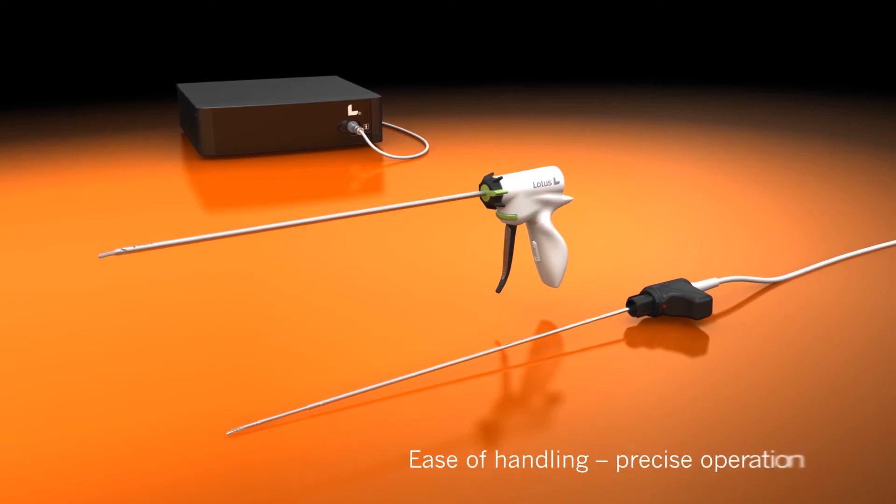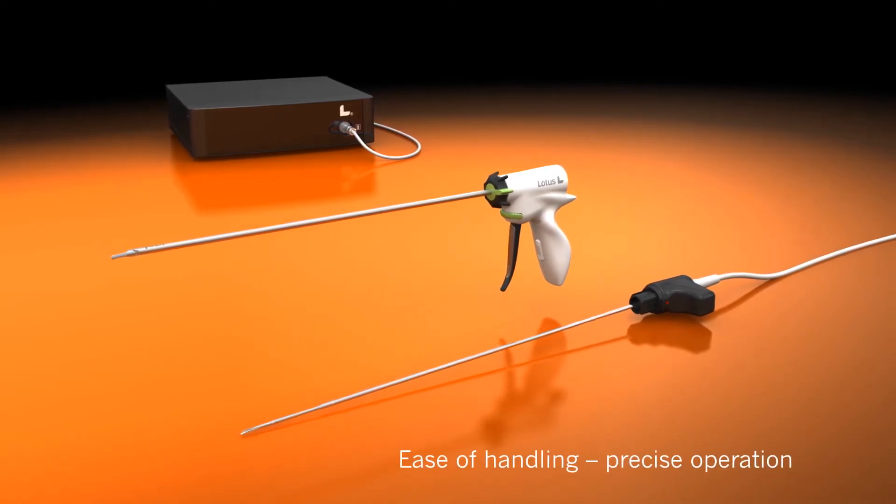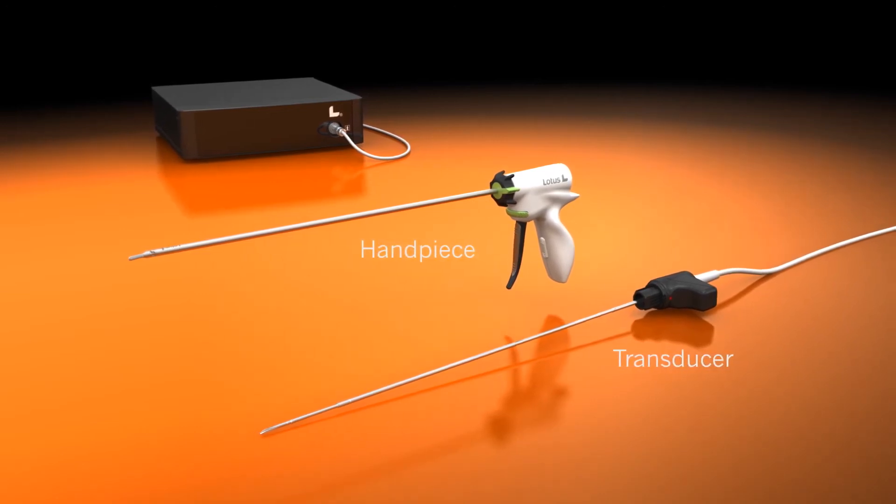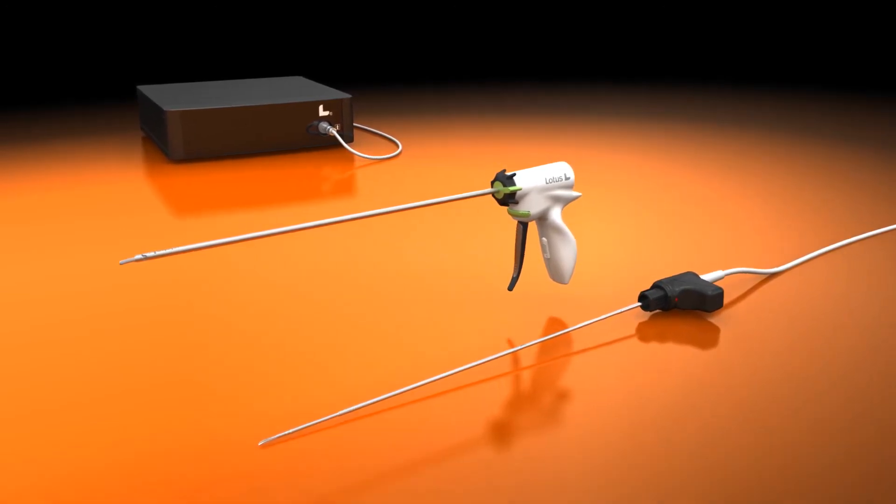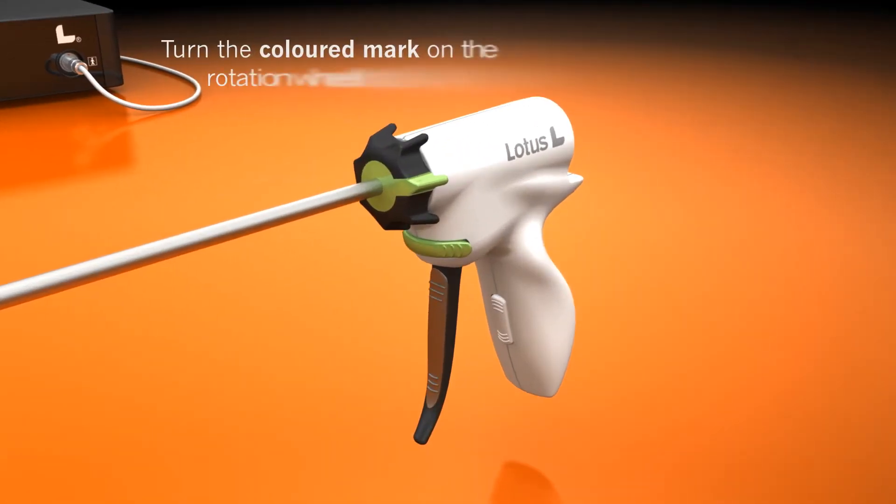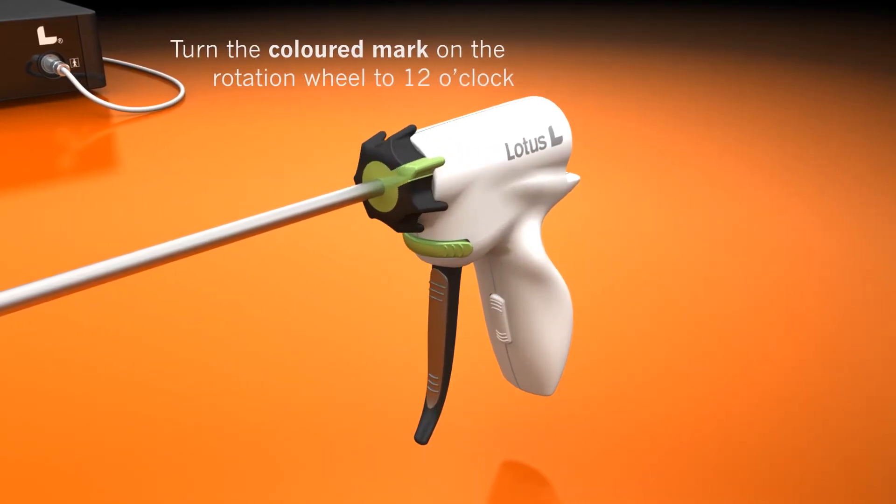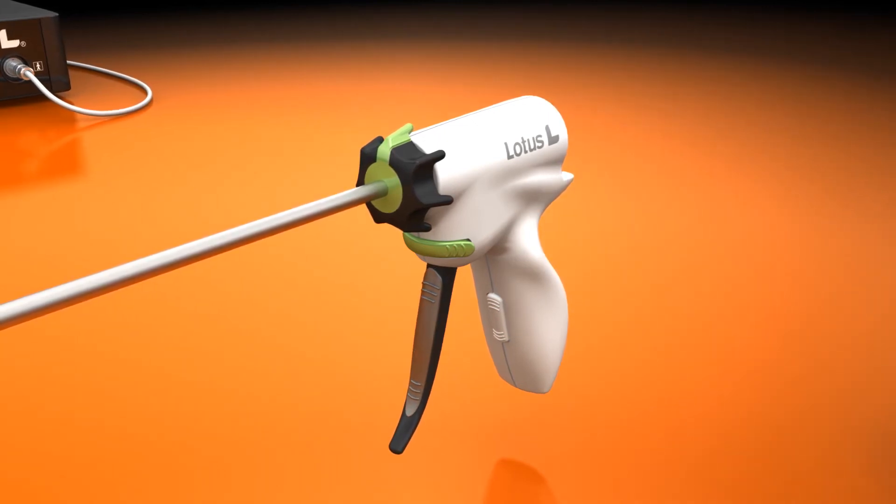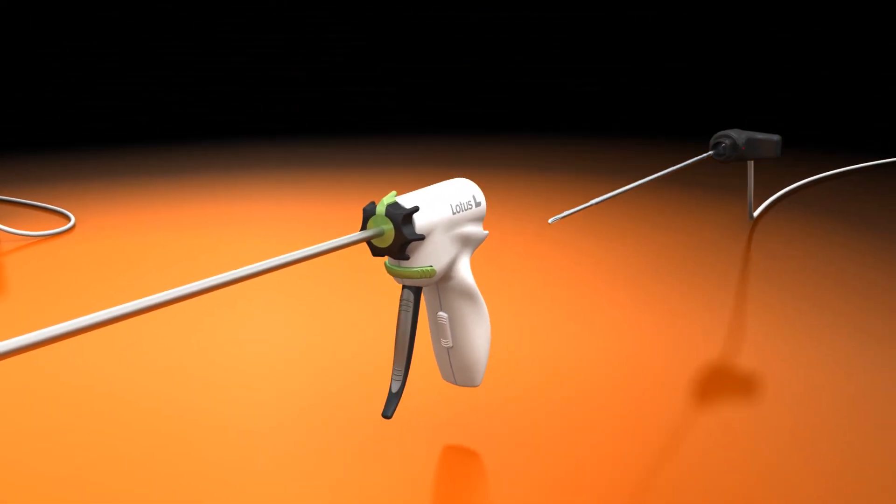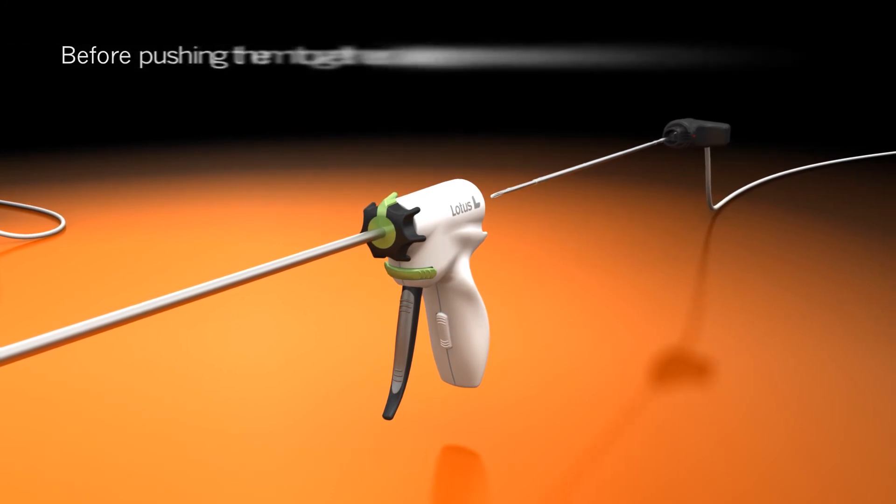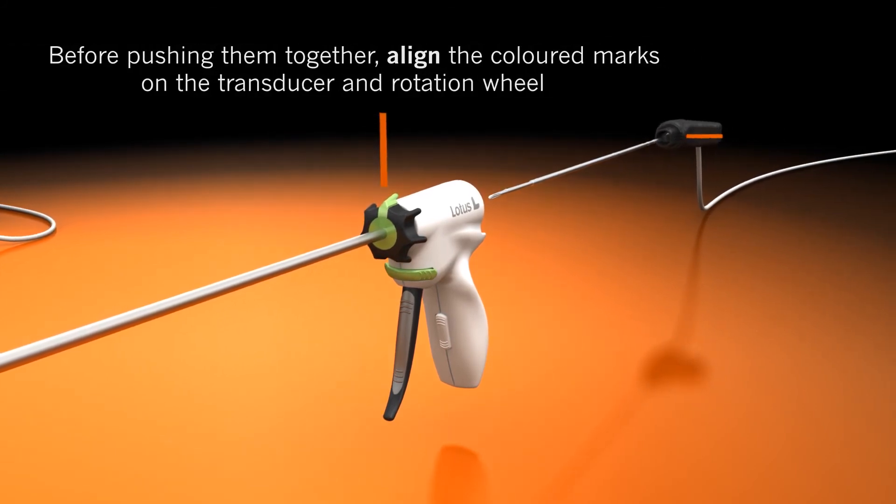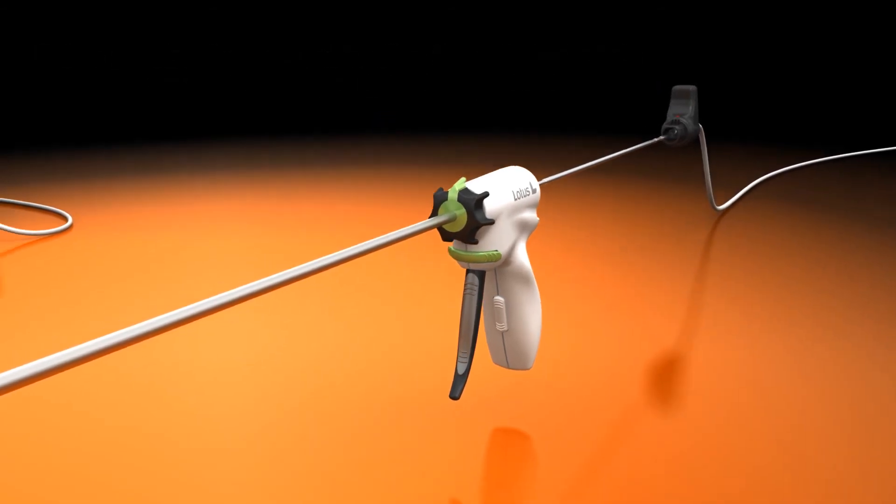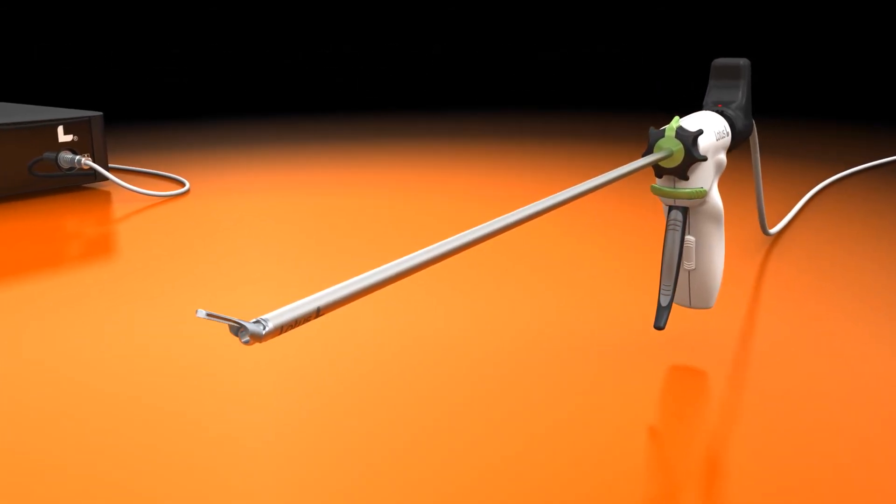The Lotus system stands out with its ease of handling allowing precise operating. The transducer is simply pushed onto the handpiece. Turn the coloured mark on the rotation wheel to 12 o'clock. Open the jaw of the handpiece. Ensure that the coloured marks on the transducer and rotation wheel are aligned. Push the transducer and handpiece together until the stop.